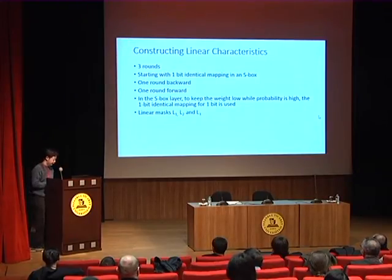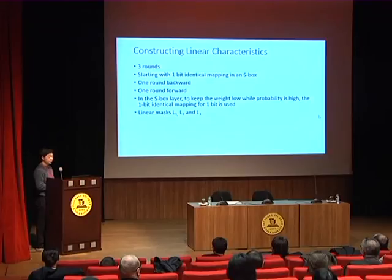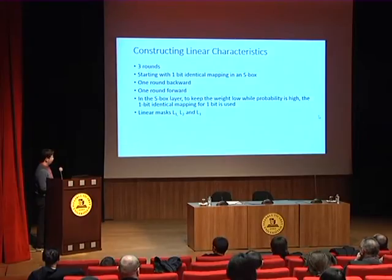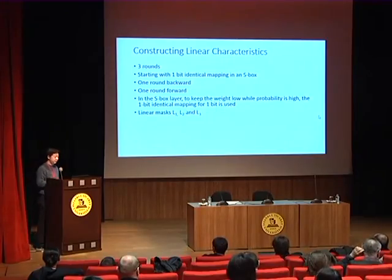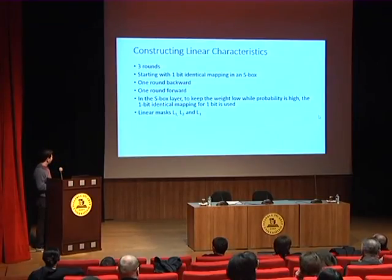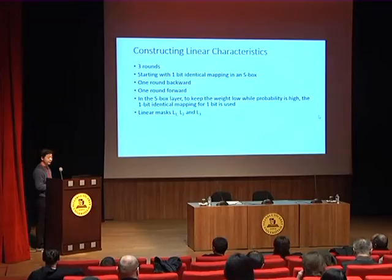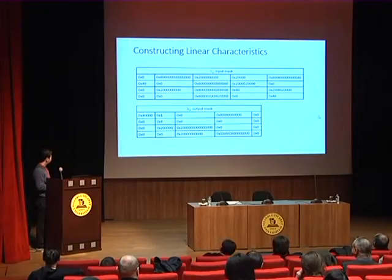For constructing the linear characteristics, also three rounds, we can use a one-bit linear relation, propagating backward and forward. For the S-box, we use a 1-2-1 identical mapping, which keeps the Hamming weights low while the probability is quite good, although not optimal. We find three linear masks L1, L2, and L3. Here are the input and output masks for the three-round linear characteristic.